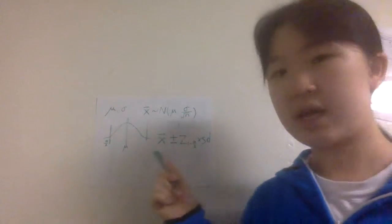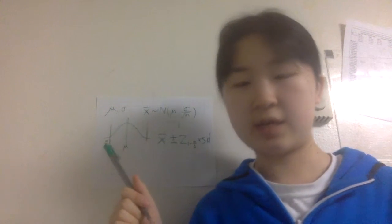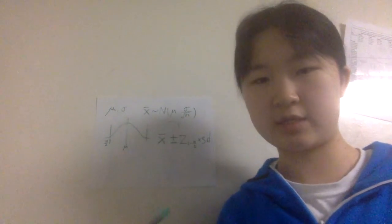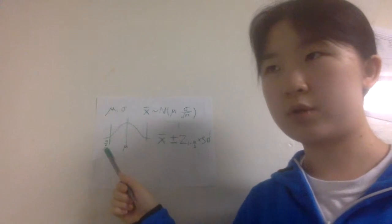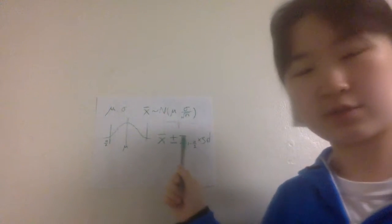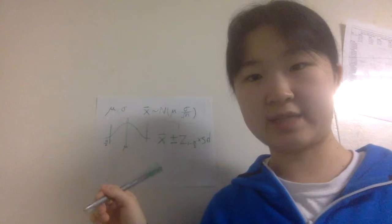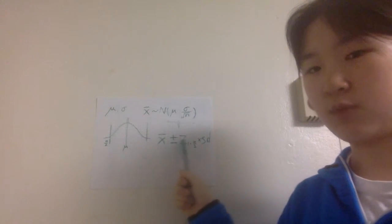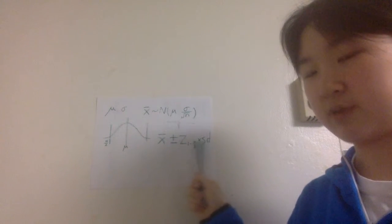If we want to use a confidence level of 95%, then we're allowing an error of alpha equals 5%. On each tail, alpha over 2 will be 2.5%. The critical z-score for 2.5% is 1.96. So the confidence interval will be x-bar plus or minus 1.96 times s over square root of n.